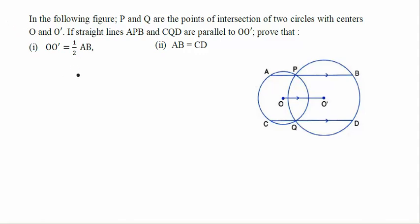Let us try to understand this particular question. In the following figure, P and Q are the points of intersection of two circles with centers O and O'. These are the two points of intersection. If straight lines APB and CQD are parallel to OO', we have to prove that OO' is equal to half of AB. Let us try to attempt this first part.